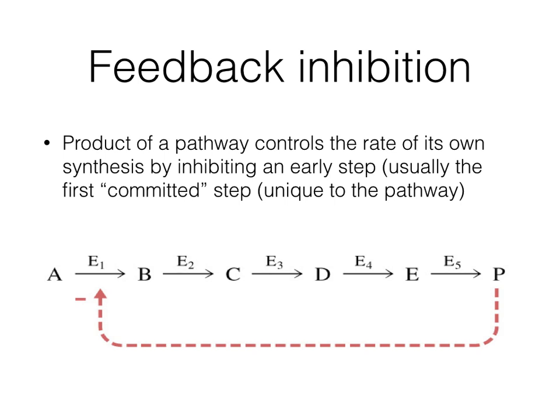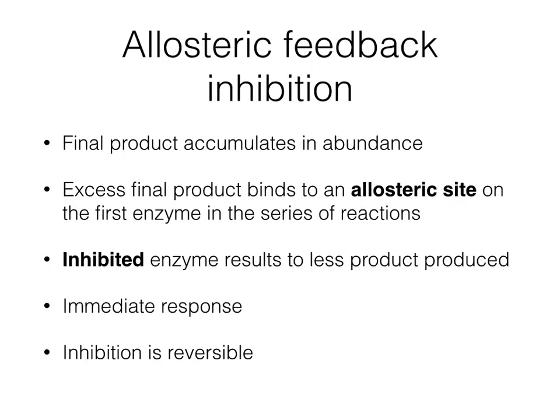This form of regulation is usually utilized as the process for feedback inhibition of some pathways. In this example, there are a series of reactants from A, B, C, D, E, and P, each step catalyzed by their respective enzymes. If there is excessive accumulation of product P, it can allosterically inhibit the initial enzyme E1 through allosteric regulation. To recap: in allosteric inhibition, the final product accumulates in abundance, the excess final product binds to the allosteric site, the enzyme is inhibited, and it results in less product produced. The response is immediate and the process is reversible.